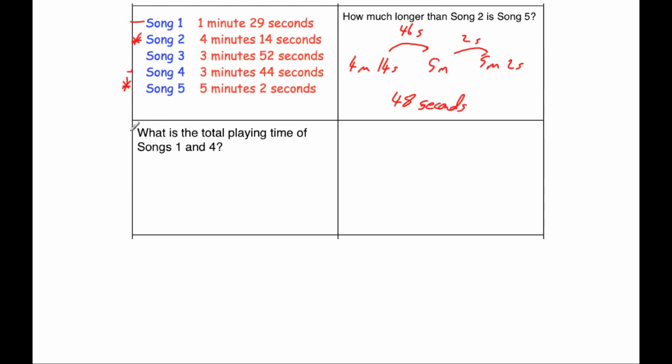Our next question says, what is the total playing time of Songs 1 and 4? We've got Song 1, which is 1 minute and 29 seconds, and Song 4, which is 3 minutes and 44 seconds. I'm going to add together the 29 seconds and the 44 seconds first, see what that is, and then add on the 3 minutes and the 1 minute.